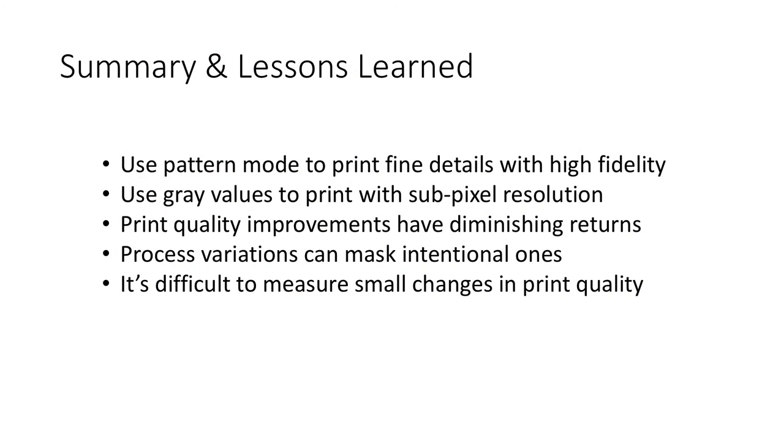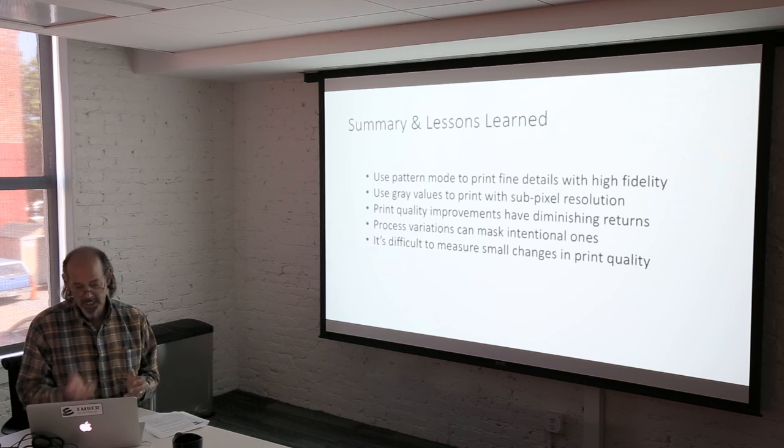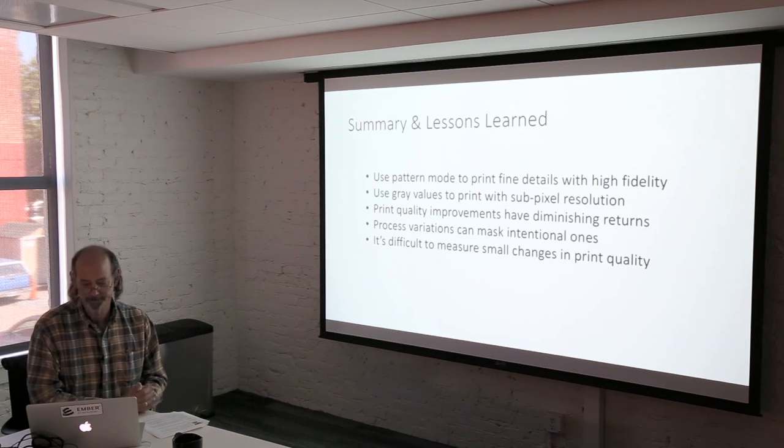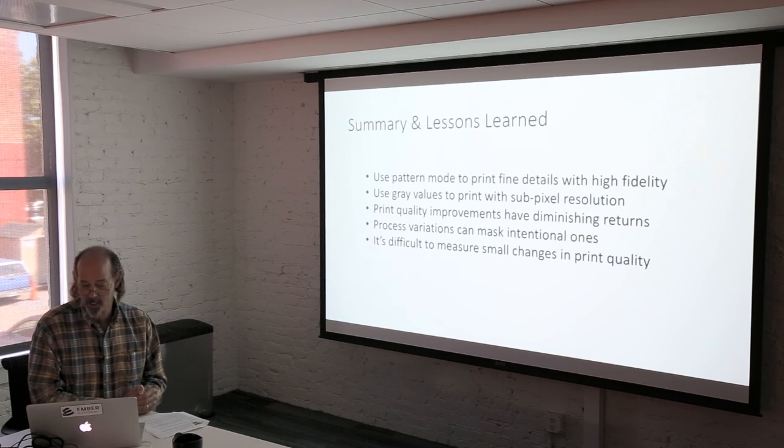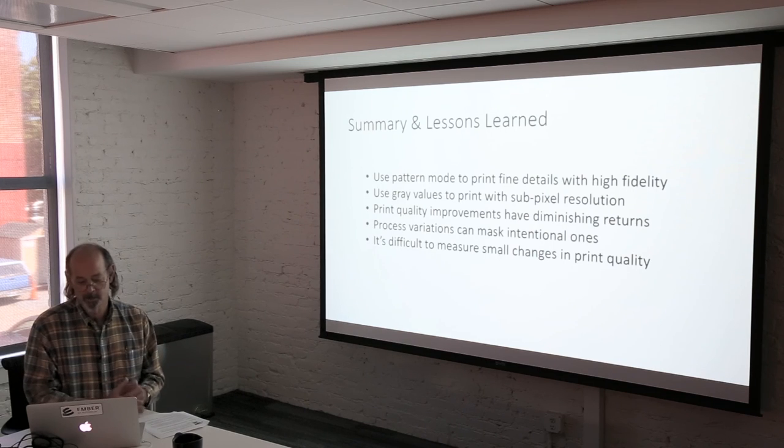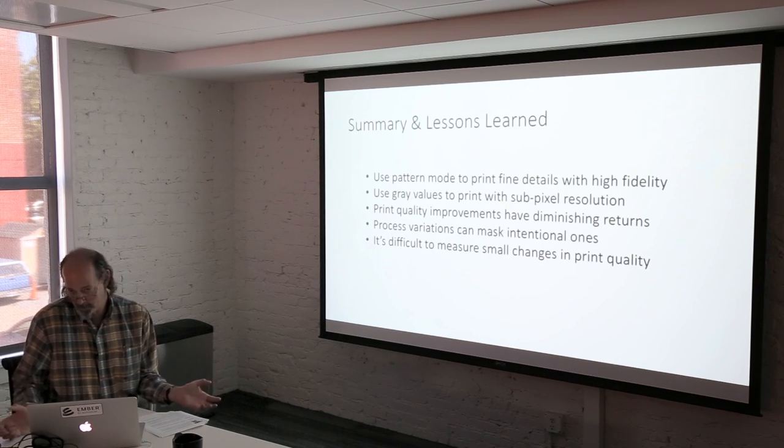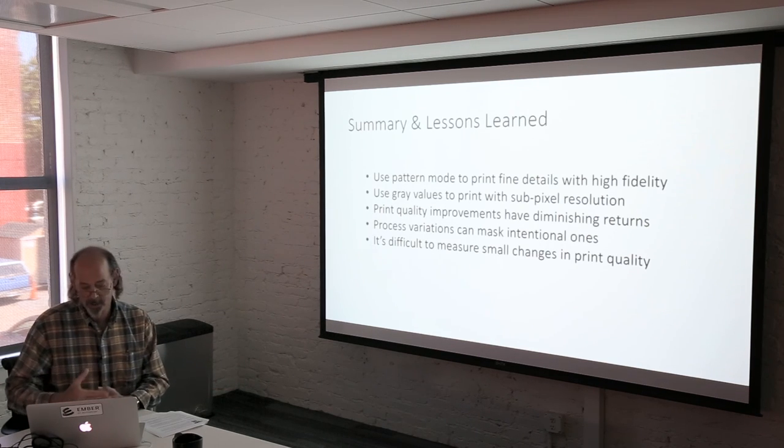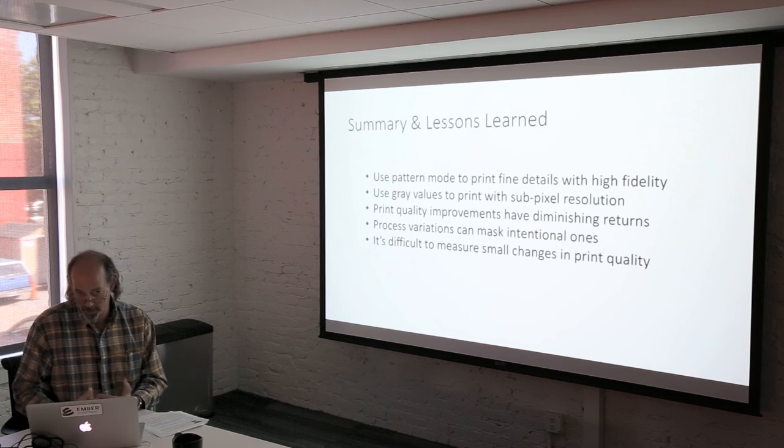So, in summary, some lessons that I learned. I would say use pattern mode if you want to print fine details with high fidelity. Video mode can give you smoother surface and smoother features, but it's always going to be possible to blur your images that you're feeding to the printer in pattern mode if that's what you want. And one advantage of pattern mode is you could choose that in parts of the print that you wanted to be smooth and still preserve fine details in other parts of the print. Use gray values to get sub-pixel resolution. Another thing I found is that as our print quality gets better, it's harder to make improvements. And, of course, it's always important to keep in mind, you know, what actually matters to a customer. Obviously, for a lot of purposes, our prints are good enough already. So, you need to consider, you know, what do they want and what are the costs in terms of, say, computation time.